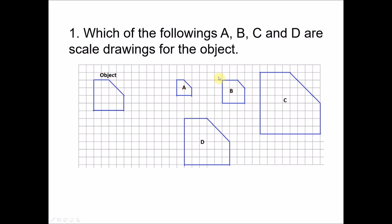Look at B. For this side, it's two units to two units. So the scale is one to one, because two to two simplifies to one to one. Hence if this is three units, the object is supposed to be three units. But here it has four units. Hence the sides are not proportional — they are not drawn with the same scale. Hence B is not a scale drawing.